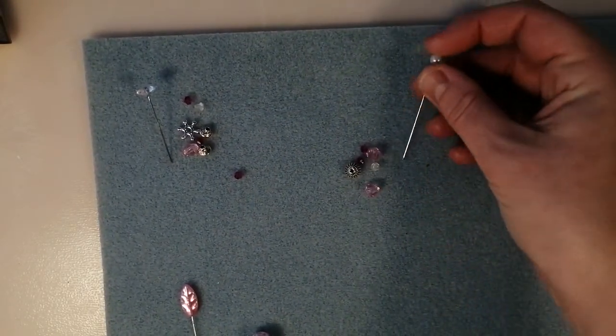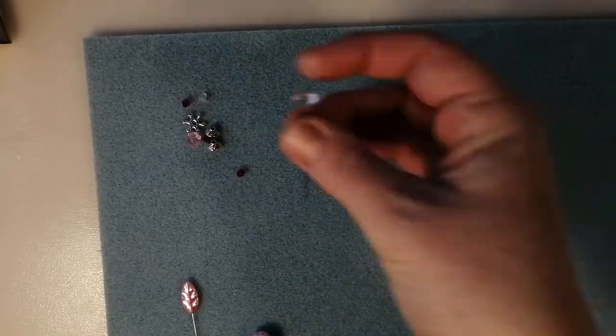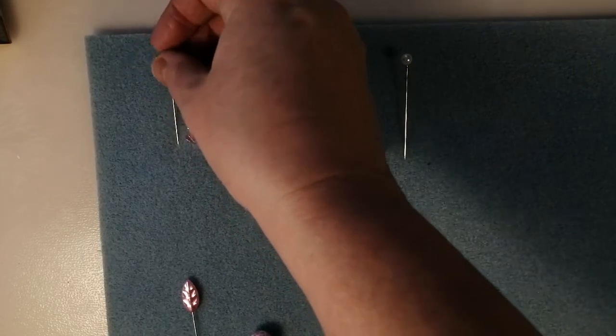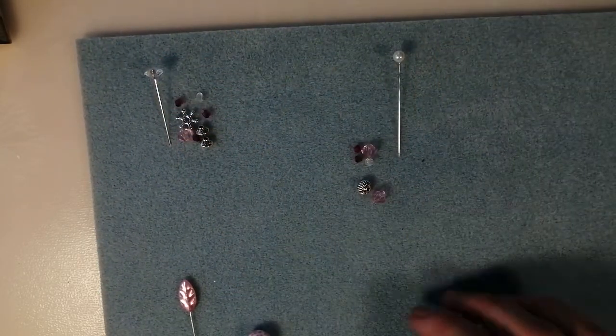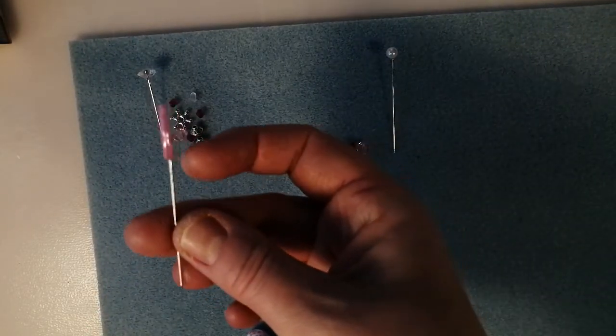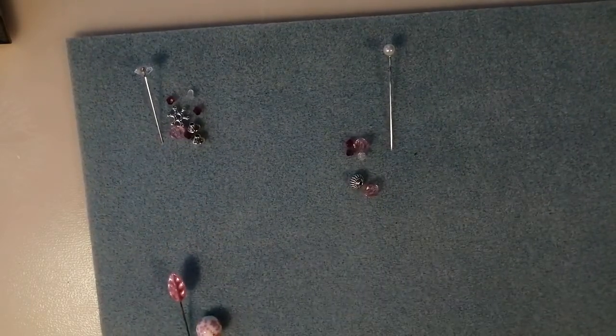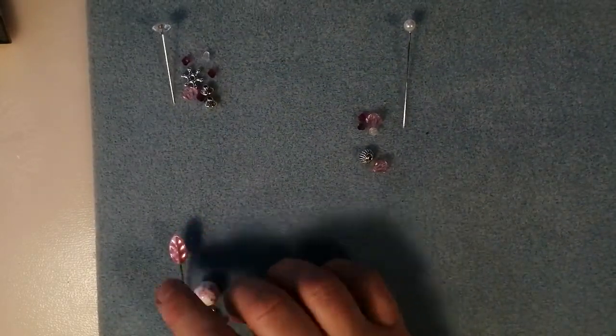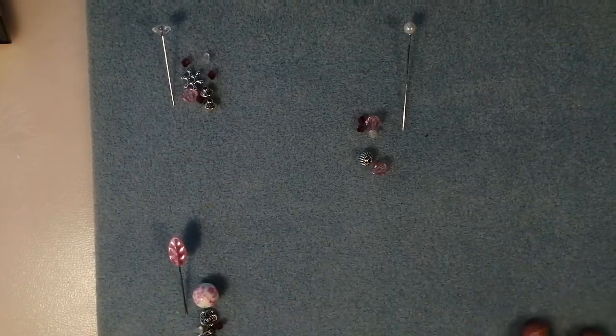These are corsage pins. These two here were from the range. These I just got online. If you just look up corsage pins on Ali or eBay or anywhere like that, you'll find those. These ones I actually got from the pound shop, and they're just long, extra long sewing pins. You can get them with little love hearts and almost like teardrop pearl things on the top.